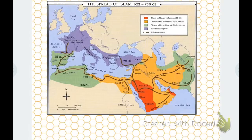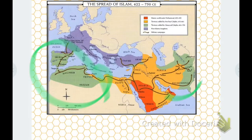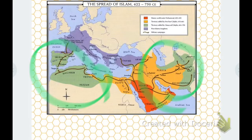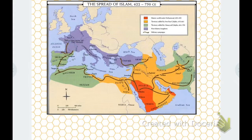Under the Umayyad, shown in green, expansion reached North Africa, the Iberian Peninsula, and into Persia and India — over 130 years. That's significant growth for the time period under the caliphate. After the Umayyad came the Abbasid, which kind of stays the same with no real growth past that.